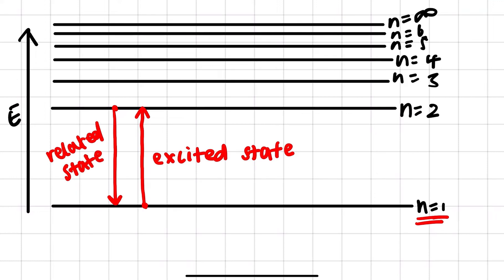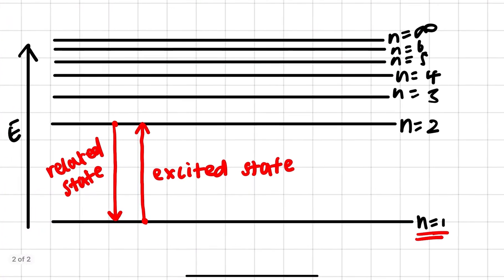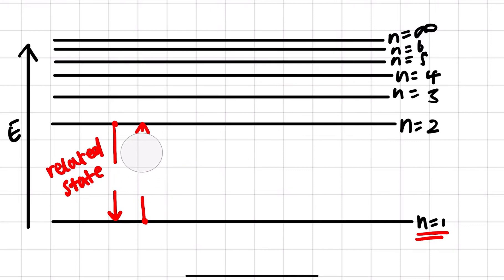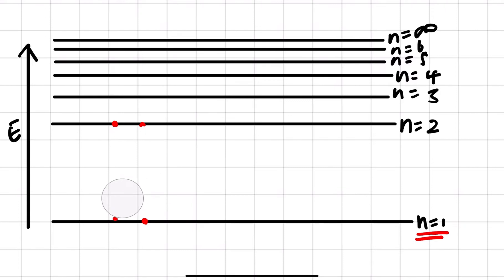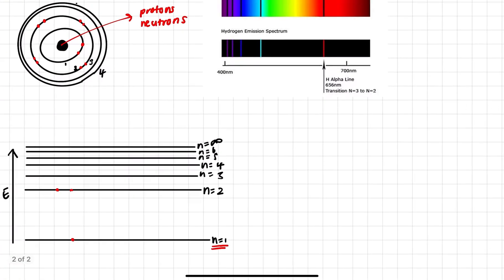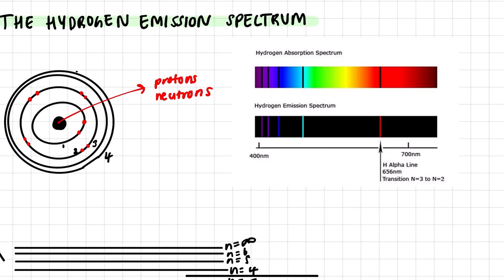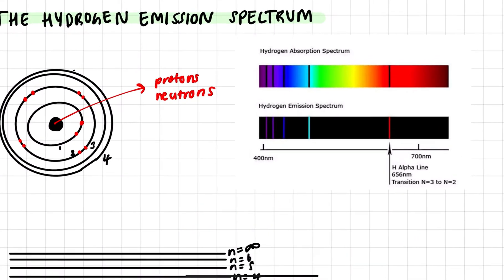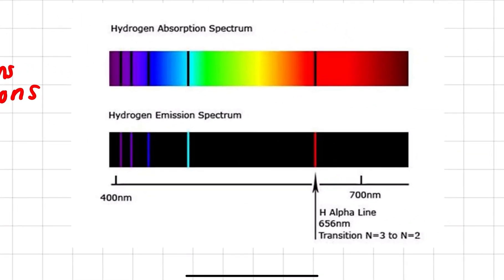This is really the core of this concept. Now if we want to look at the emission spectrum, we're going to be focusing on electrons moving from a higher energy level to a lower energy level. To understand this visually, we can look at the color spectrum.